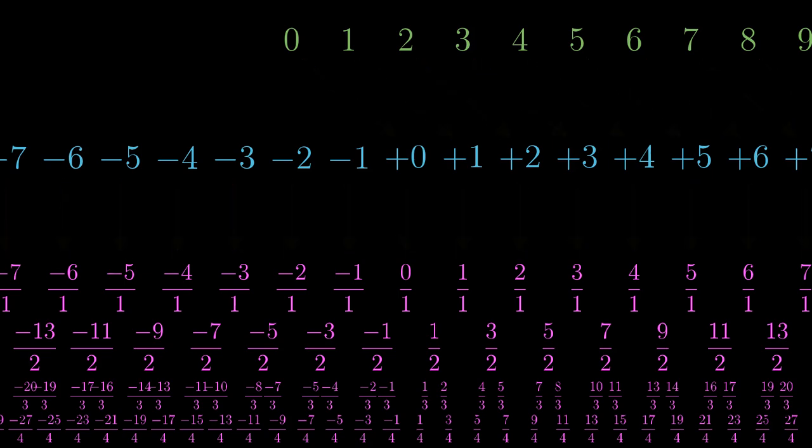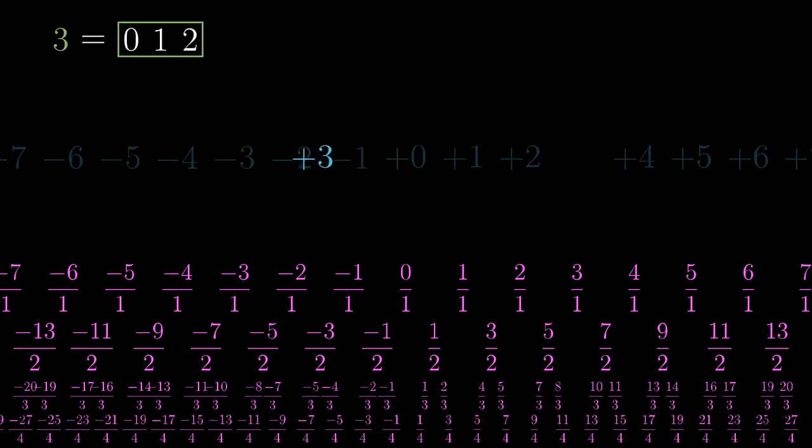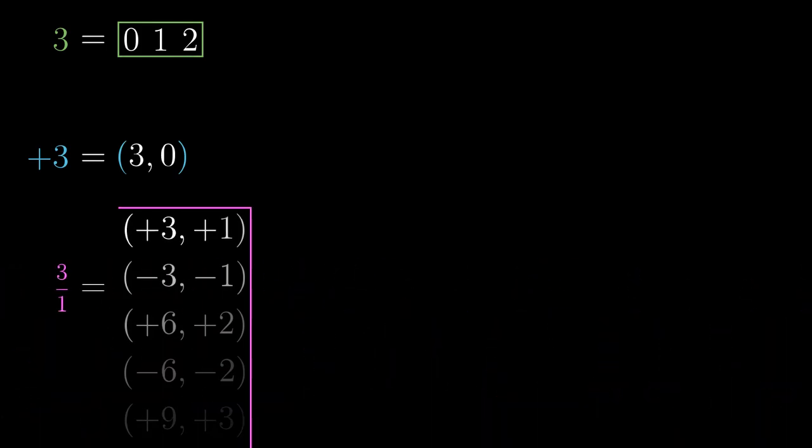Yet, formally speaking, the natural number 3, the set {0,1,2}, is different from the integer 3, the ordered pair (3,0), and that is different from the rational number 3, which is the set of all the pairs with ratio 3.